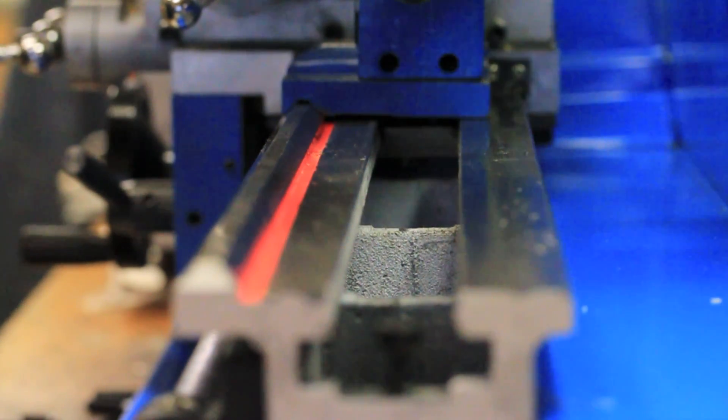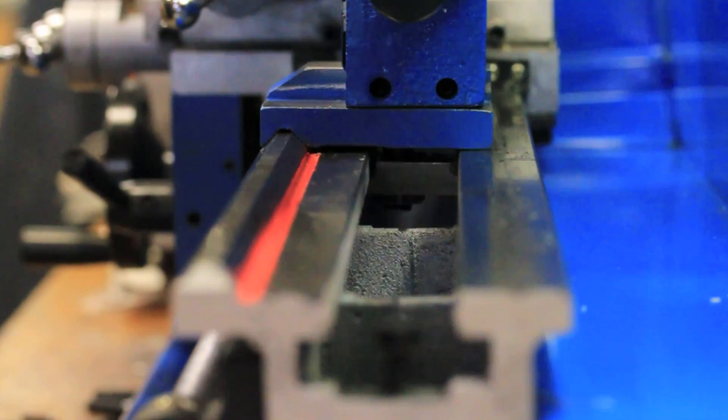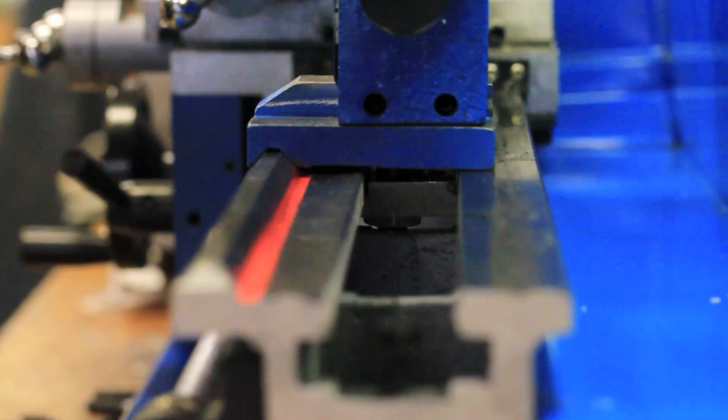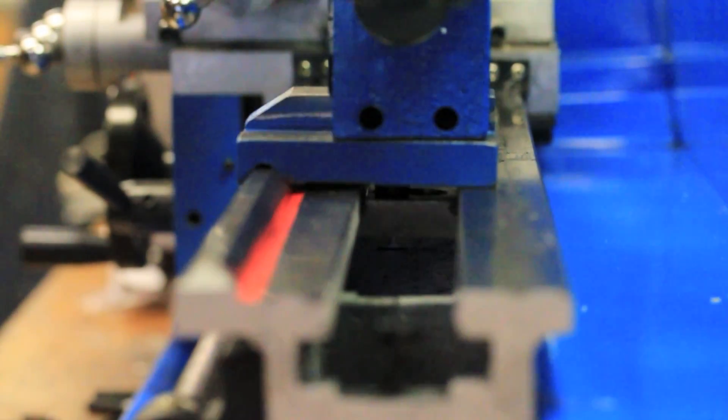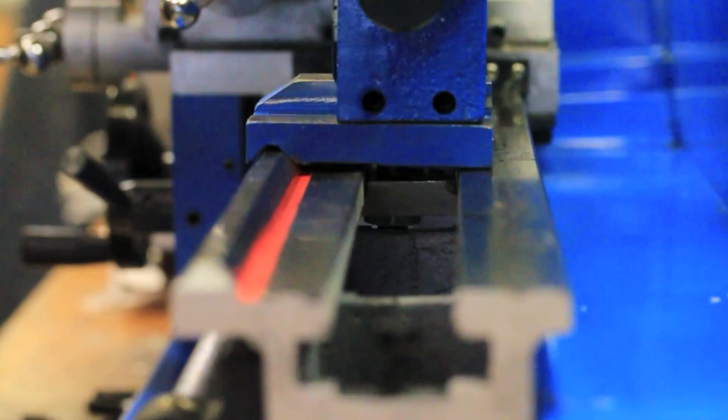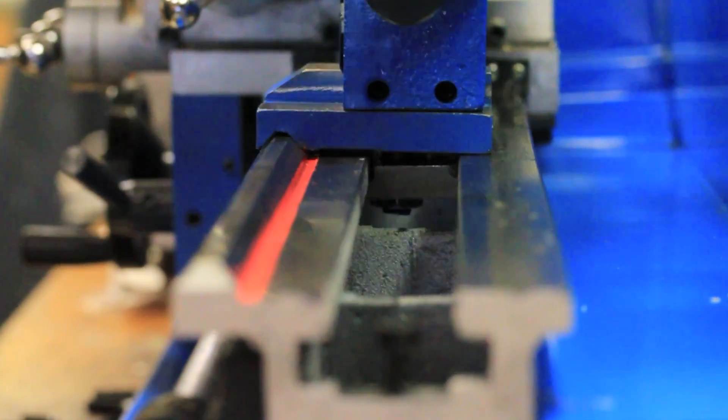This will definitely be a source of aggravation in the future. The nut to tighten the tailstock hits the supports. A little clearancing with a grinder should be able to take care of that without too much trouble.